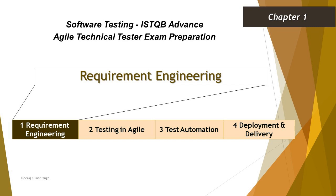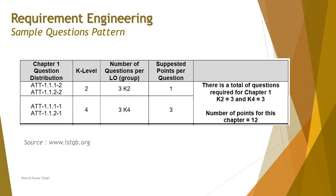Hello friends and greetings for the day. Welcome back to another tutorial on ISTQB Advanced Agile Technical Tester. We are done with Chapter 1 Requirement Engineering and now we are moving to the sample questions of this chapter. We will be expecting six questions from this chapter altogether, with three questions from K2 and three questions from K4, totaling around 12 points from this chapter.